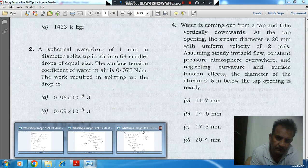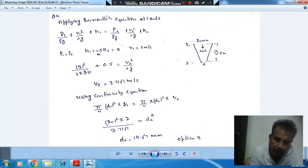So this is the tap. This is the stream. Position 1 is the tap opening and 2 is 0.5 meter below the tap opening. So take this as 1 and take this as 2.